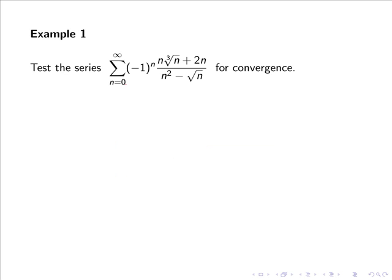Let's test the series from 0 to infinity of (-1)^n times (n·∛n + 2n) all over (n² - √n) for convergence.